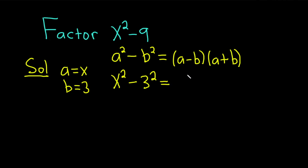So this is equal to parentheses x minus 3 times x plus 3. It's directly applying the formula. And so this would be the full factorization of x squared minus 9.